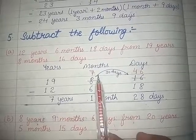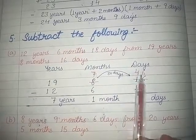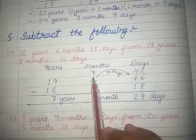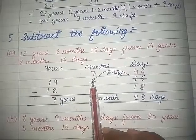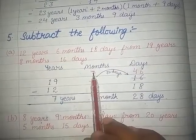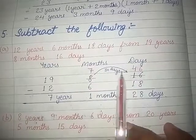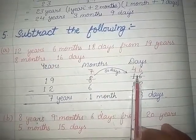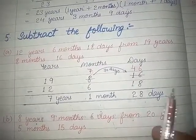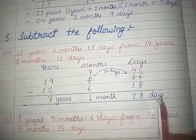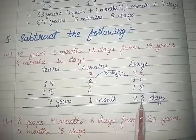Carry hum months se lenge. 1 carry li, toh months mein 8 se 1 gaya — 7 bacha. Aur vo 1 month days wale column mein aakar 30 days ban jaayega. Toh 30 aur 16 pehle se the — 46 days. Ab 46 mein se 18 minus karo — bacha 28 days. Aur 7 minus 6 — 1 month. 19 minus 12 — 7 years. Toh yeh aa gaya students aapka answer.